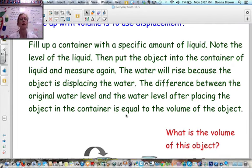So you're going to be calibrating your containers tomorrow in class. I'm going to have you do that first. And then you're going to fill up a container with a specific amount of liquid, note the level of the liquid, and then put the object into the container and measure again. So what's going to happen is, as you put the rock in or some other object from your desk, the water level will rise because the object is displacing the water that was there. So the difference between the original water level and the water level after placing the object in the container is equal to the volume of the object.